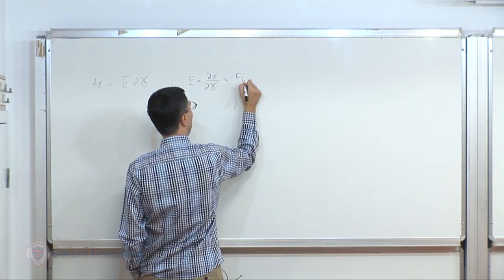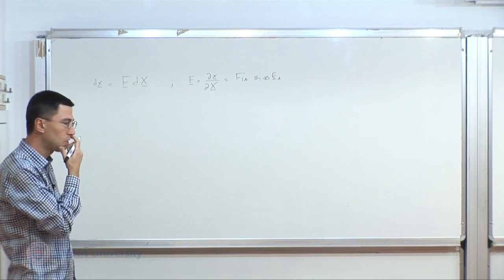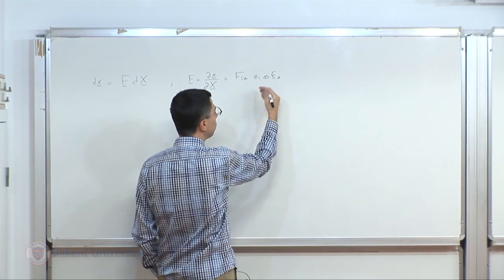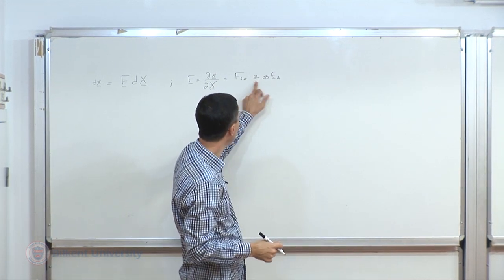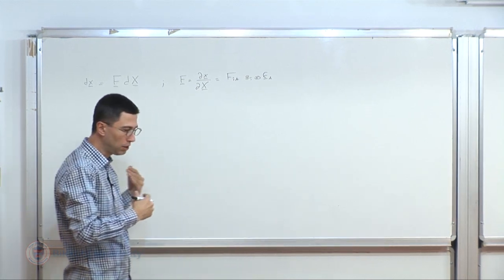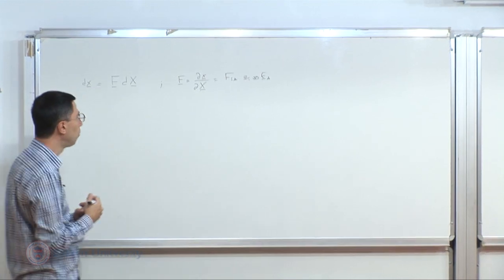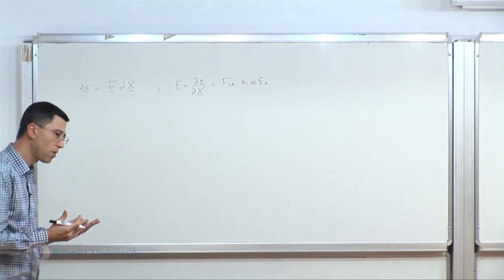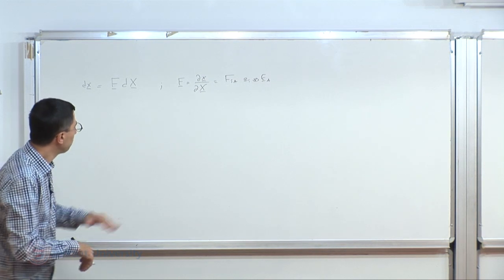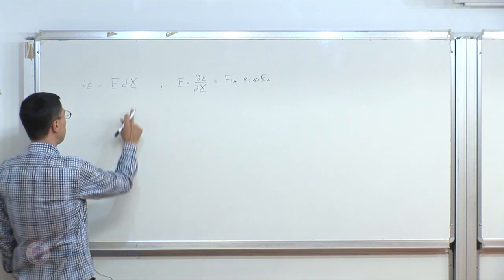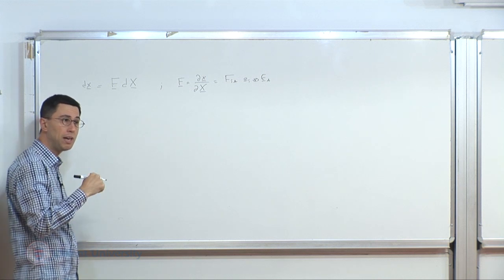In terms of components, it reads F_iA e_i⊗E_A. It's a two-point tensor, and one has to keep track of how these two-point tensors — or in general one-point tensors — operate on other tensors and vectors, to make sure that the correct vectors come into operations with one another. That doesn't necessarily ensure correctness, but at least it ensures the operations make sense. The deformation gradient tensor governs how line elements are mapped to one another, and that's the basis for figuring out how the remaining elements are mapped.